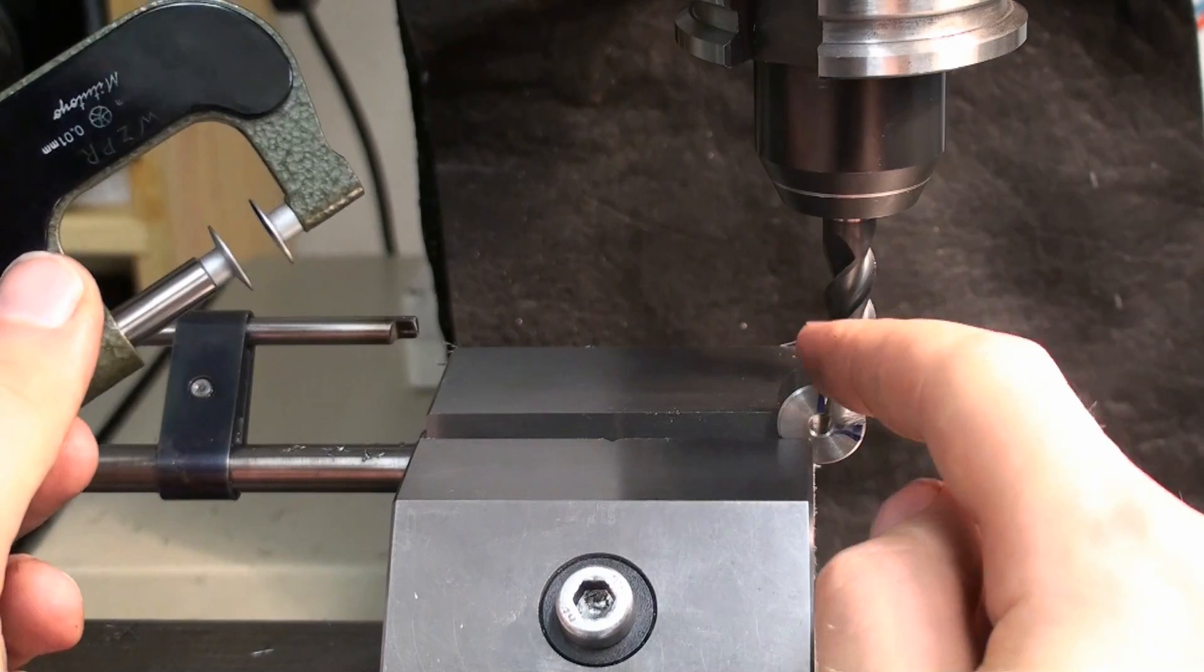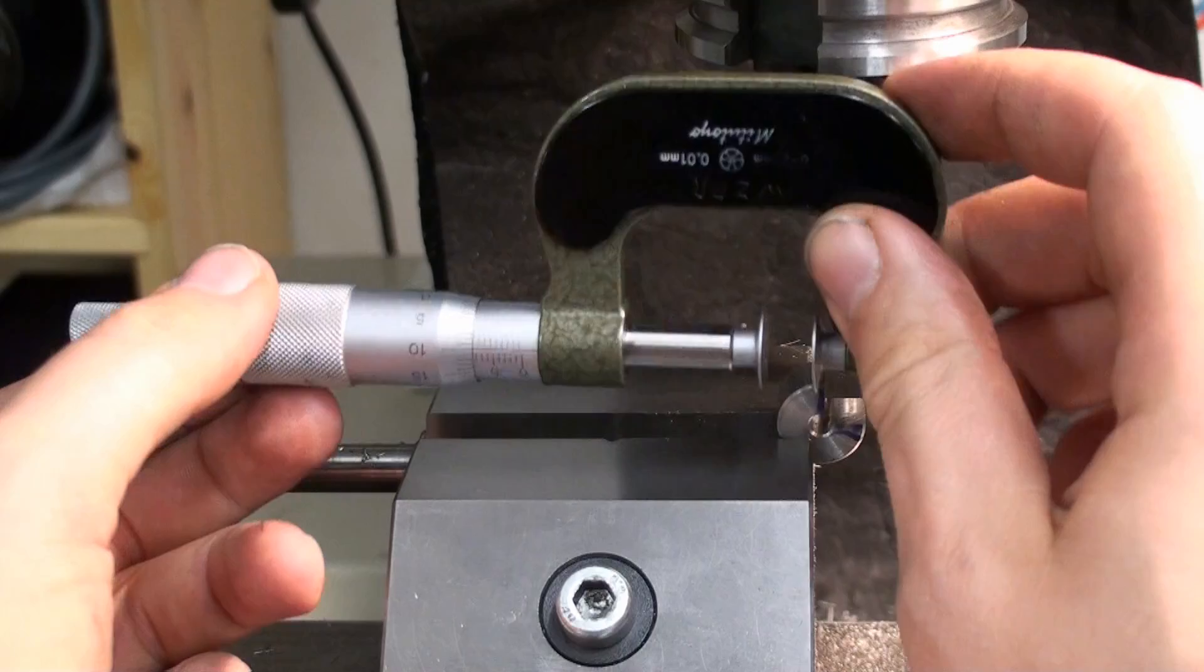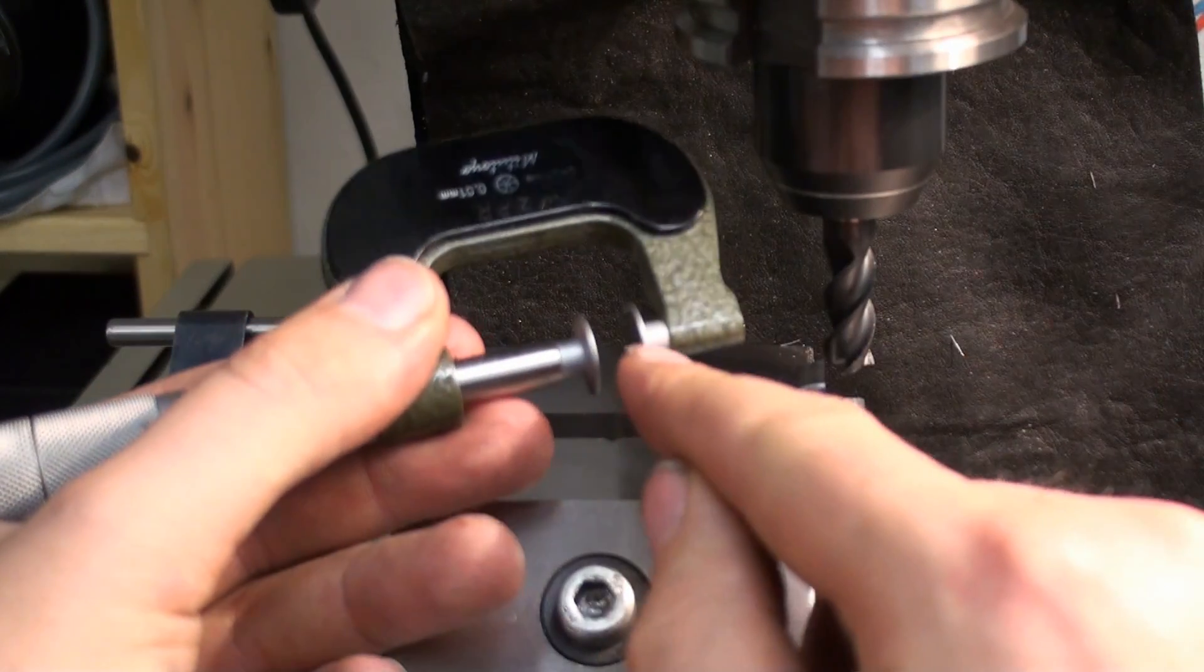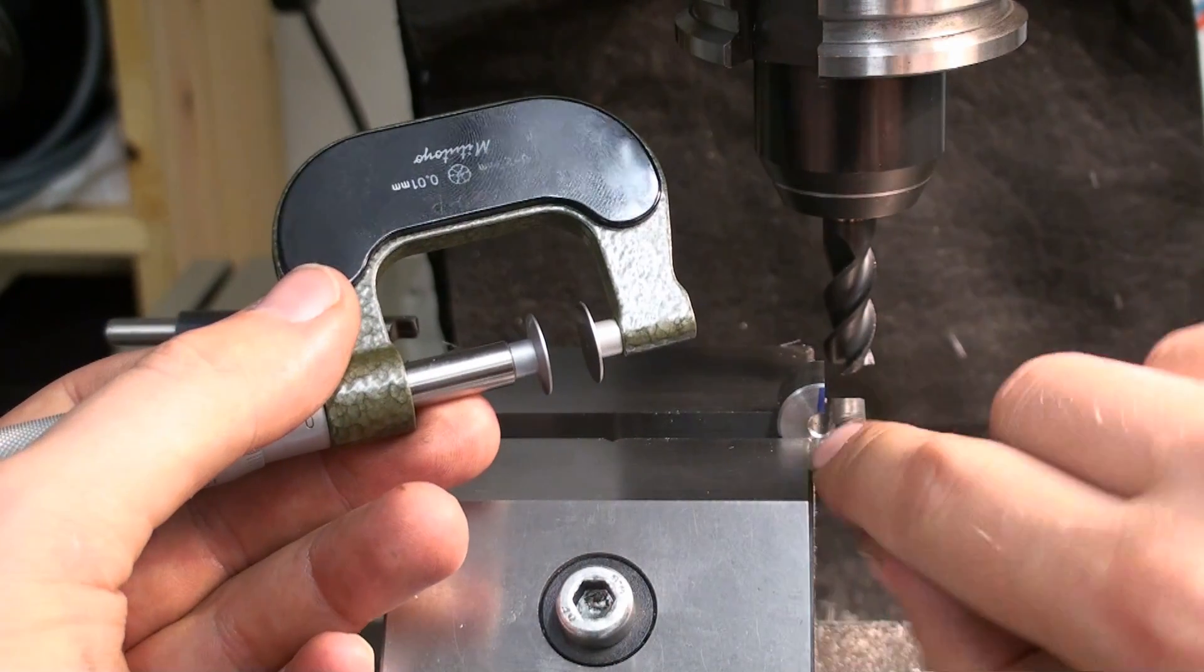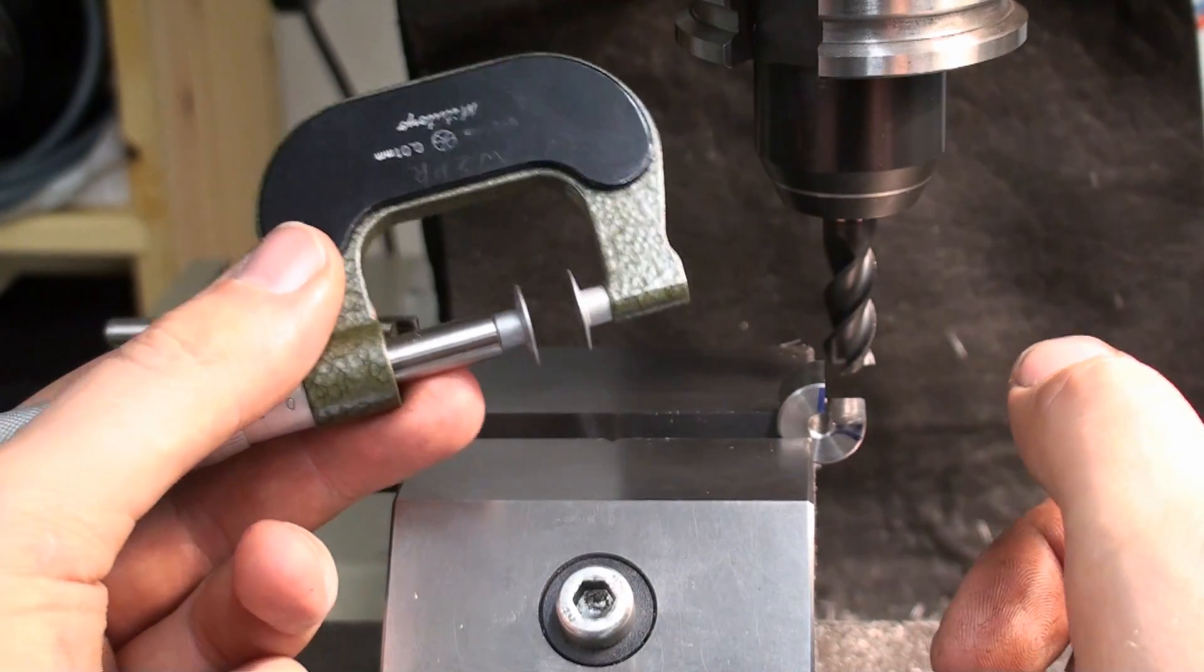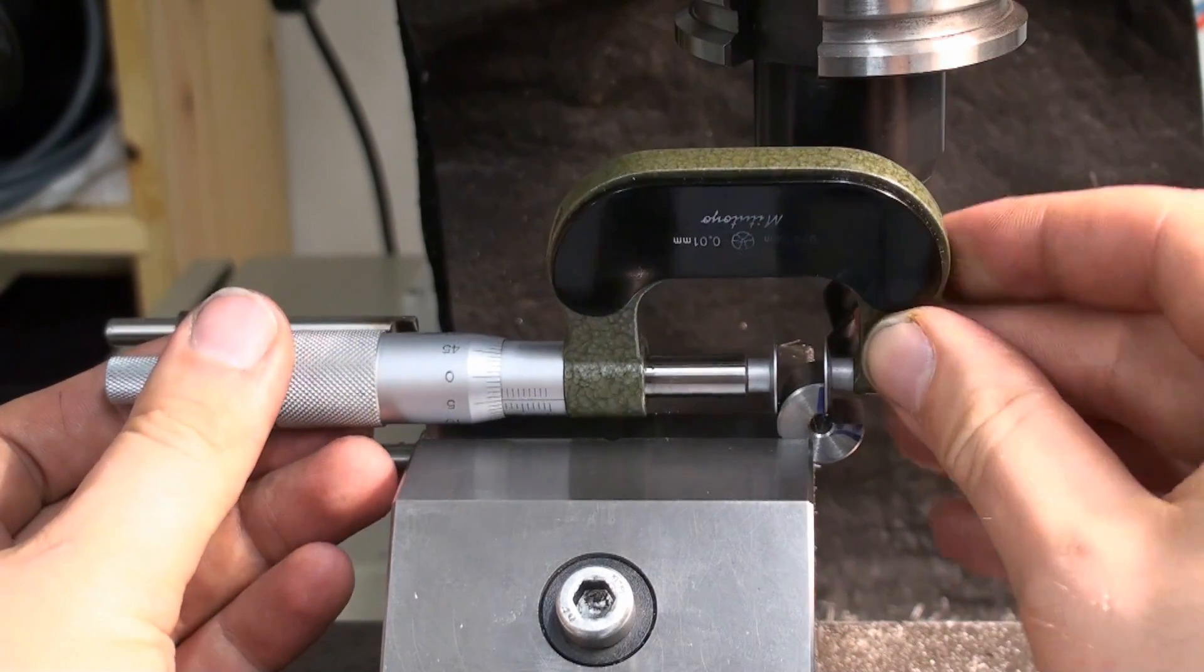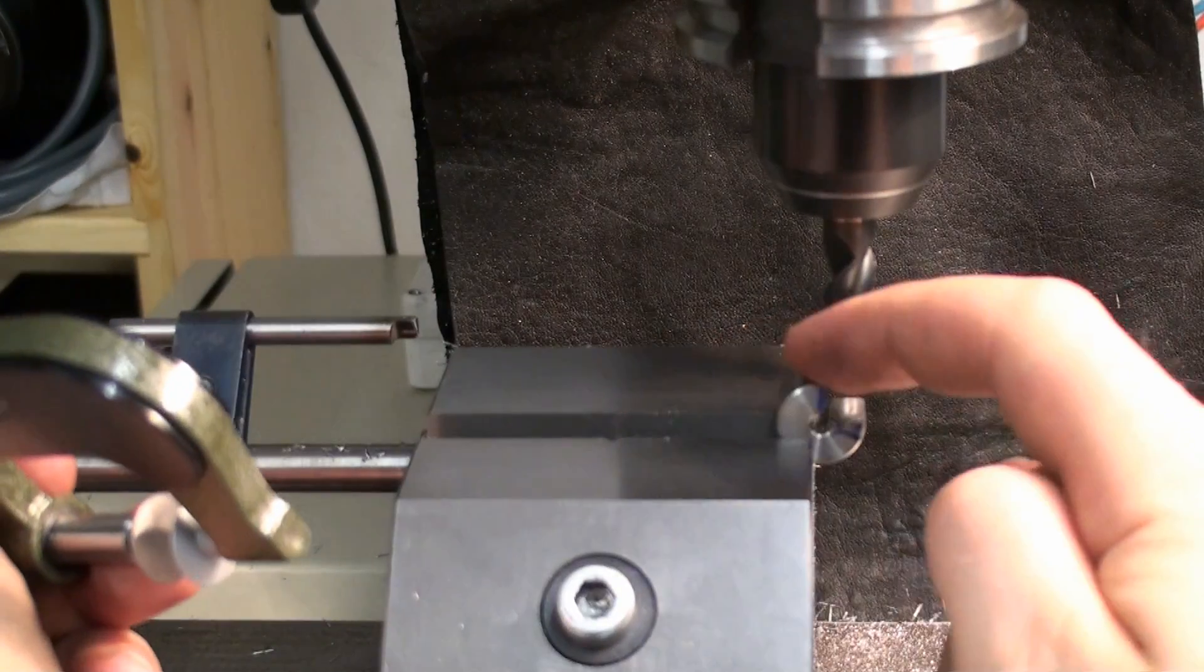Okay, we removed the bulk of the material and now this is where our disc micrometer comes in handy. With the disc shaped anvils we can get into this relief cut and actually measure over the center line of the workpiece. And that will give us the true thickness of this remaining material.